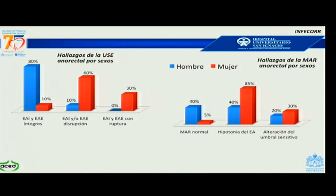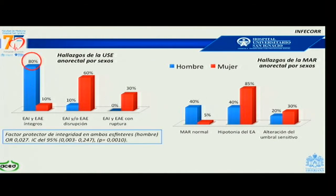En los hallazgos por sexo en cuanto a la ultrasonografía, el 80% de los hombres (representados en color azul) tenían ambos esfínteres íntegros. El 60% de las mujeres tenían disrupción de uno de los dos esfínteres, y el 30% de las mujeres tenían ruptura de ambos esfínteres. Se realizó un análisis por subgrupos de casos y controles en donde se evaluó el ser hombre como un factor protector para la integridad de ambos esfínteres, con un OR favorable.